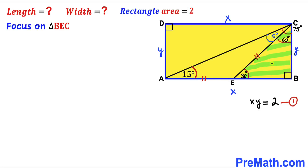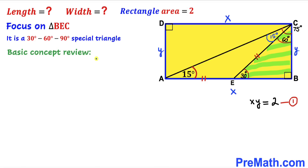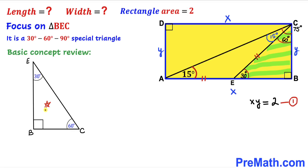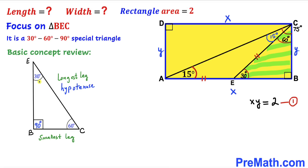Now let's focus on triangle BEC. We can see this is a special 30-60-90 triangle since angle BEC is 30 degrees, angle BCE is 60 degrees, and angle EBC is 90 degrees. The side opposite to the smallest angle (30°) is our smallest leg, and the side opposite the largest angle (90°) is the hypotenuse.